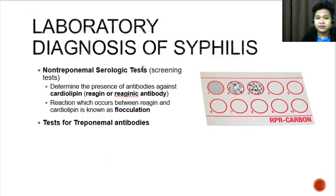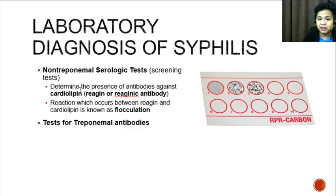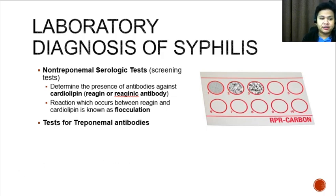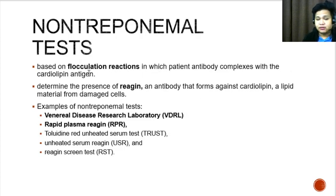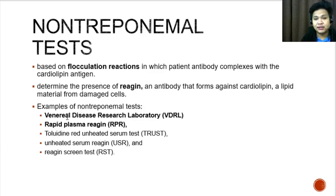For the laboratory diagnosis of syphilis, we rely on non-treponemal tests as well as treponemal tests. Non-treponemal serologic tests are usually used for screening. They determine the presence of antibodies against cardiolipin — we call these reagin or reaginic antibodies. The reaction between reagin and cardiolipin is known as flocculation. Examples of non-treponemal tests include the VDRL (venereal disease research laboratory test) and the RPR (rapid plasma reagin test).